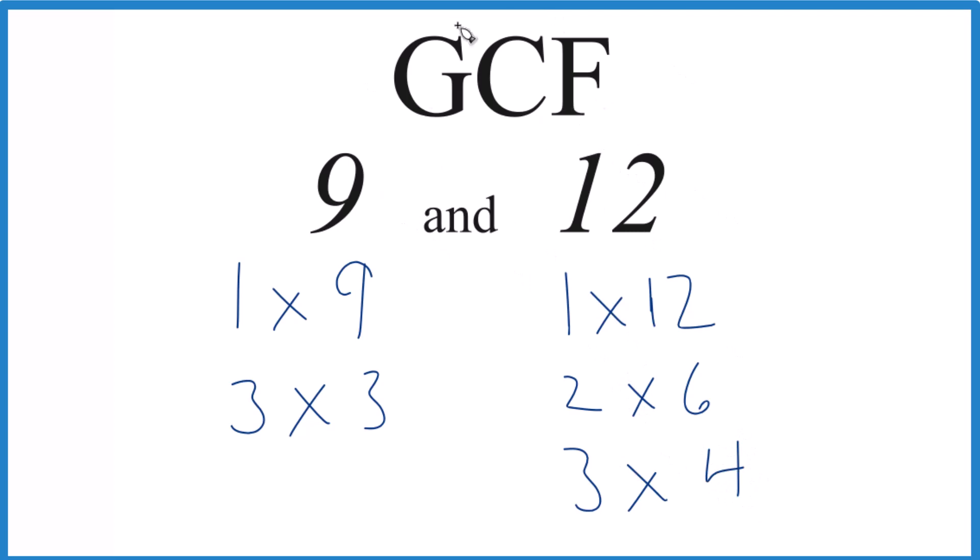So let's find a factor that's in common. 1, that goes into 9 and 12 evenly. 3, we have 3, and that's actually the greatest common factor. This is the greatest number that goes into both 9 and 12 evenly.